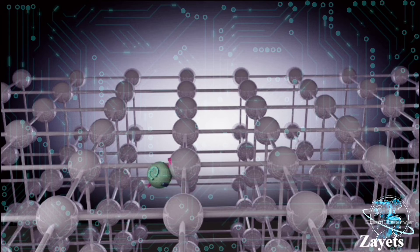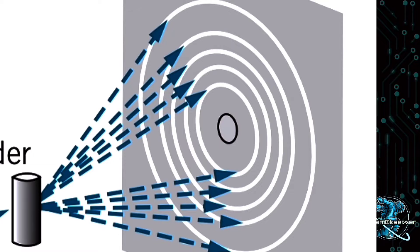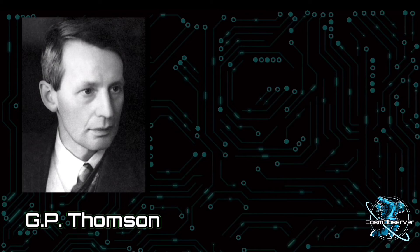Here, each atom of the crystal grating acts as a scatterer, and the scattered electron waves can interfere with each other, and we have crystal diffraction for electrons. The Nobel Prize for this experiment was given to G.P. Thomson and two other scientists, Davison and Germer.